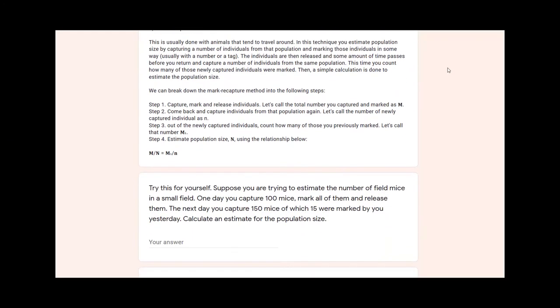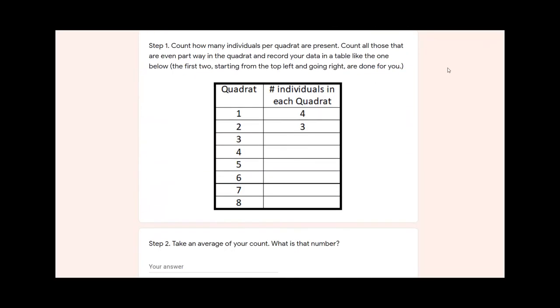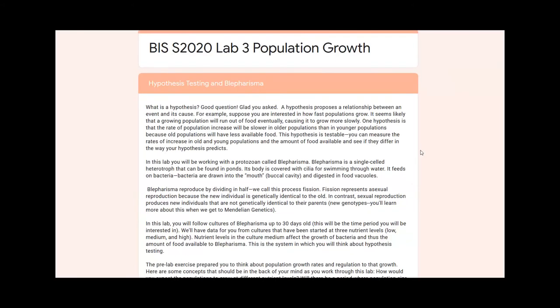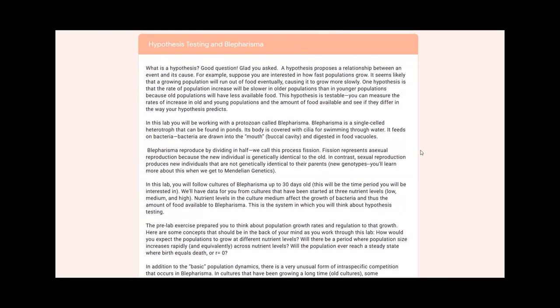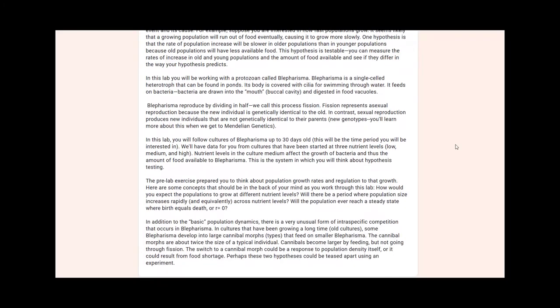The lab will be completed via Google Forms and also as a Zoom session. At this time you may navigate to the Google Forms — there should be a link provided on Canvas — and begin lab three before your next lab session. This is important as part of the Google Forms lab should be completed before you meet with your TA.